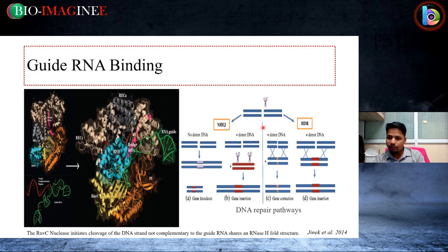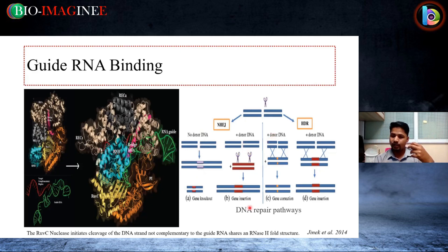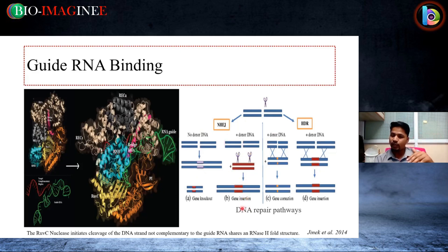When cleavage occurs, two types of repair systems activate: non-homologous end joining and homology-directed repair. If there is no donor DNA, gene knockout will occur — some region might be removed or it may not. A blunt end is created and can join directly. Gene knockout may or may not occur. But if we have provided some template or donor DNA, there is a probability of gene insertion — though this is random in NHEJ and may or may not occur.